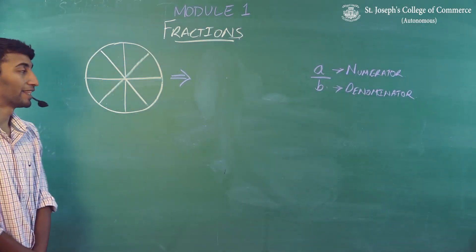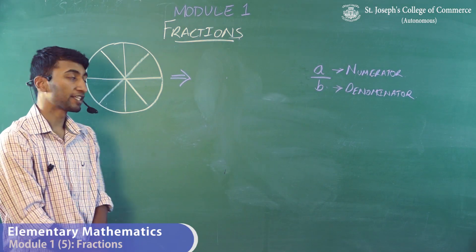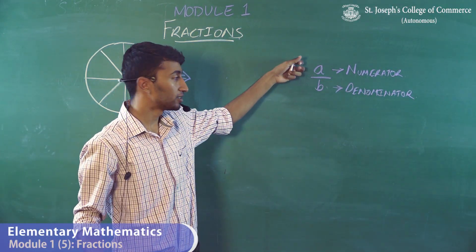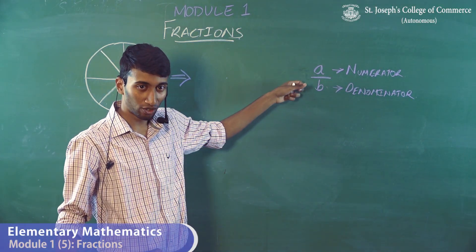Moving on to the next part of module 1, that is fractions. What are fractions? Fractions are basically written in the form A by B, where A is called the numerator and B is called the denominator.